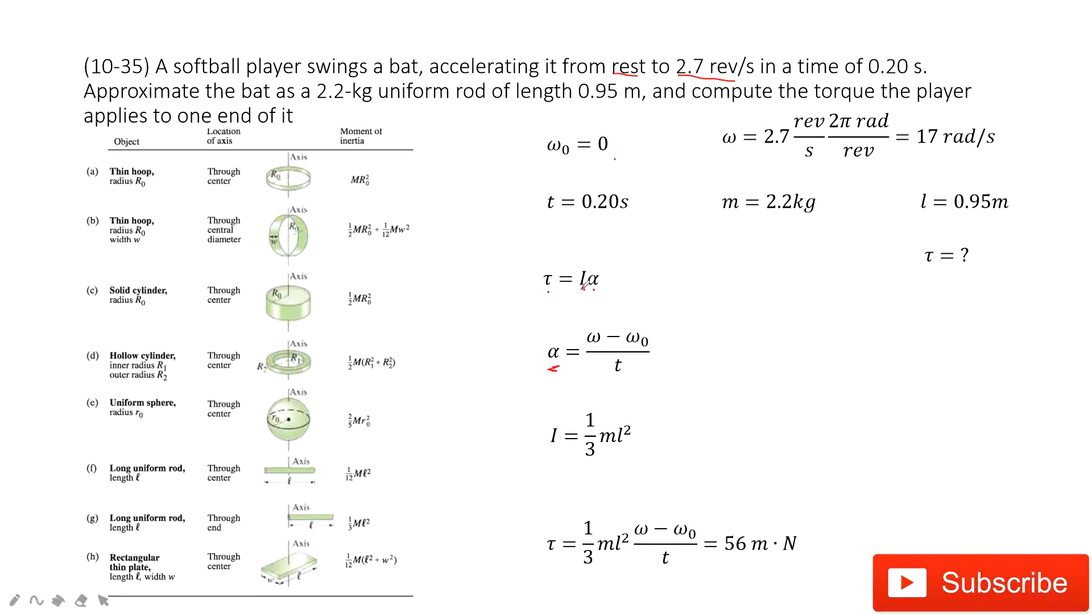The next thing is we need to find I, moment of inertia. It tells you this bat is a 2.2 kg uniform rod of length 0.95 m. So we look at the picture in our textbook. Which one satisfies? This one. We consider it as a uniform rod.